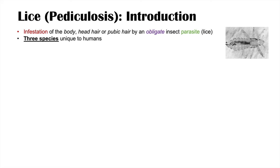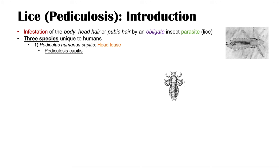There are three species of lice unique to humans. The first species is Pediculus humanus capitis, which is the head louse — 'louse' being the singular form of lice. Having Pediculus humanus capitis leads to the condition known as pediculosis capitis, which is simply having lice in the hair or on the head.